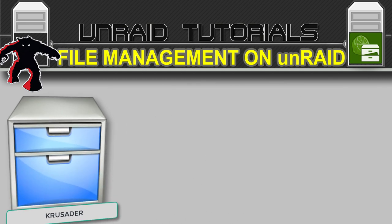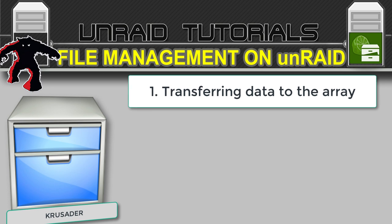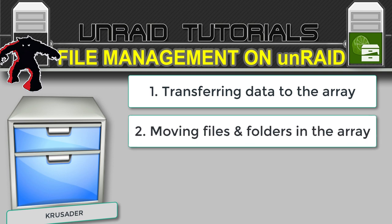Let's list the main topics we'll be covering in this video. One: transferring data to our array. When you first set up UnRAID you'll no doubt already have data from another system that you want to move to UnRAID, so we'll look at the quickest and easiest way to do this. Two: moving files and folders within the array — moving data from one share to another, from one disk to another, or even just deleting some files.